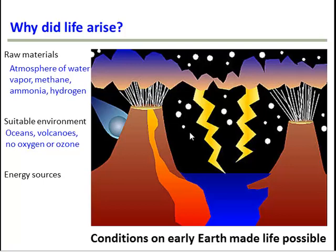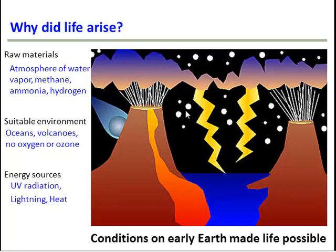The environment of the Earth back then also had oceans full of chemicals, volcanoes that were very active, and lots of storms, which meant lots of lightning, lots of electricity, and therefore lots of energy sources. There was also UV radiation from the sun, and heat from volcanoes and deep-sea thermal vents. Another thing to note is that there was no ozone layer back then, and the ozone layer protects the Earth and living things from UV rays from the sun.